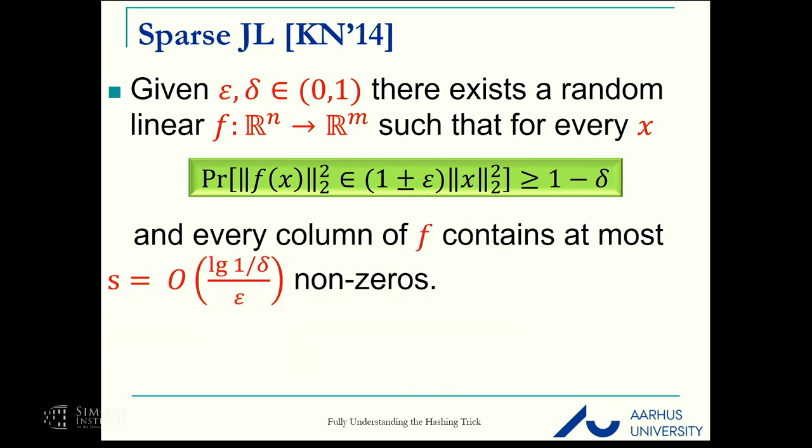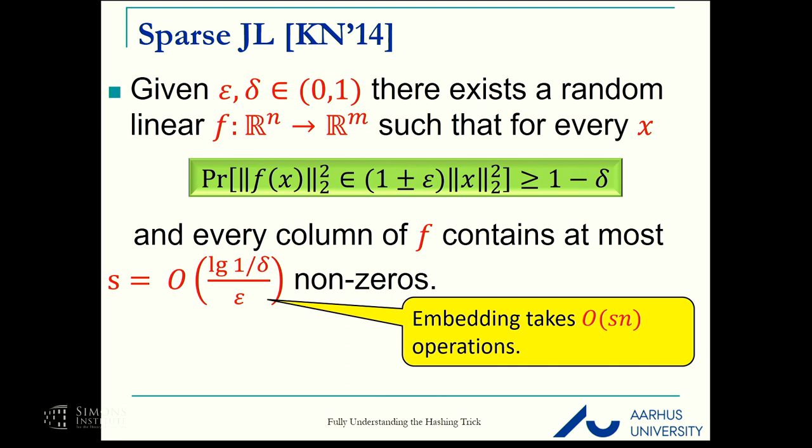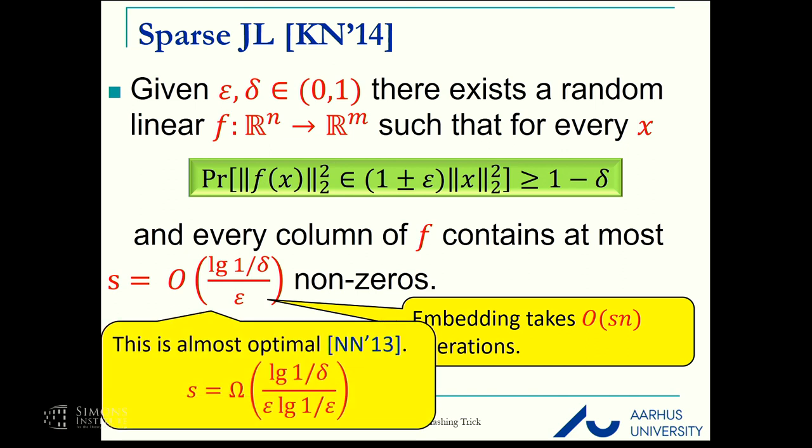Applying the embedding takes order of MN operations. We want to do this a bit faster. One approach is to find sparse matrices that guarantee the same guarantees. Sparse JL by Kane and Nelson showed this is possible with every column having at most log(1/delta) over epsilon non-zeros.